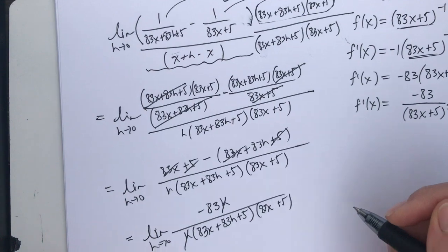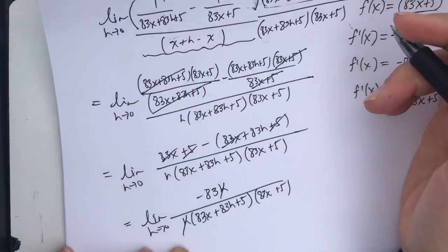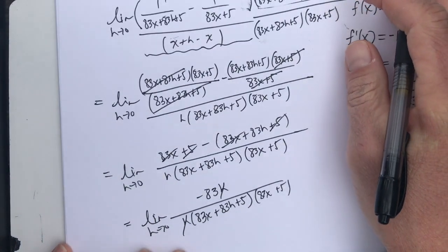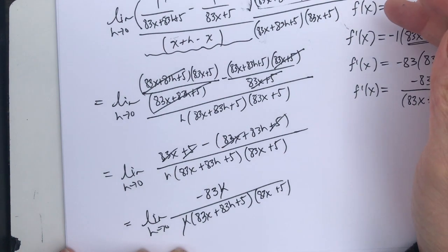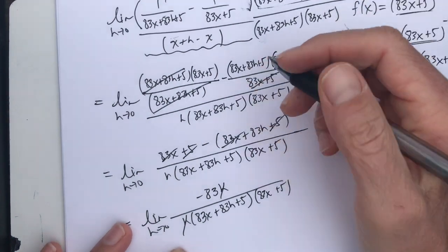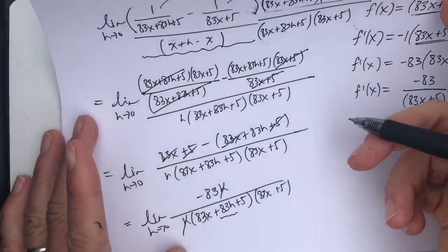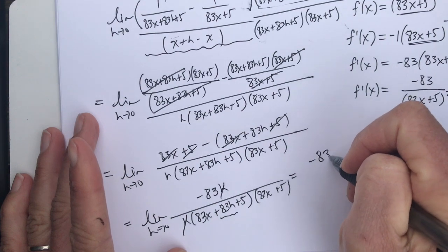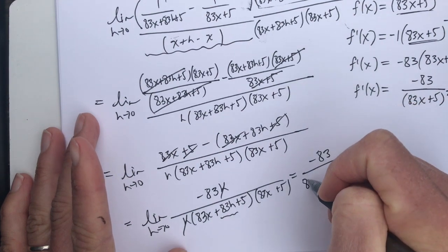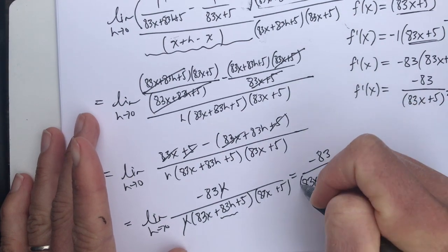Notice I've got two h's that will cancel in the numerator and denominator. And now if I take my limit as h goes to 0, this term here will go to 0. So I will be left with a negative 83 all over 83x plus 5, because this guy went to 0, times this one, 83x plus 5.